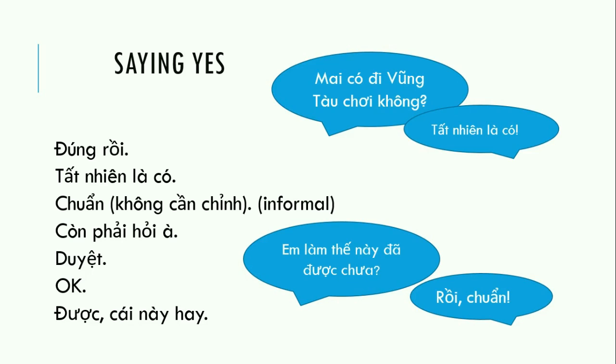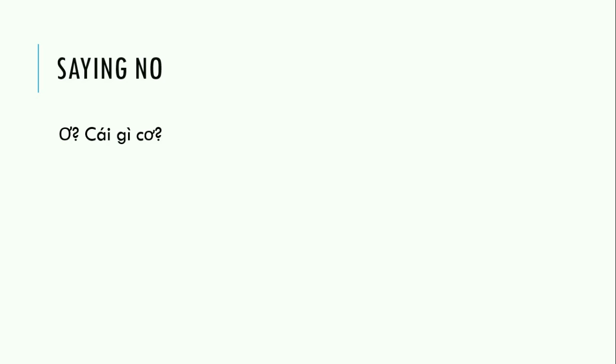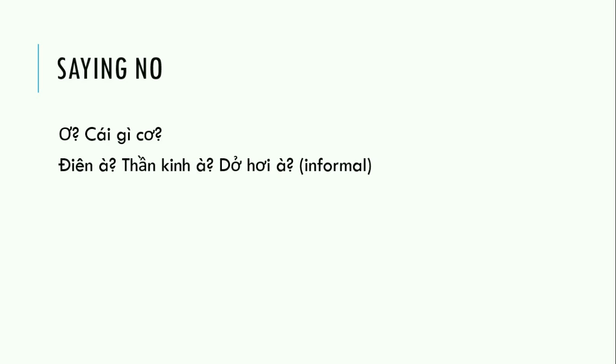Now some phrases to say no. Most of them are quite informal. If you want others to repeat what they said, you can say 'ơ' or 'hả' — meaning 'what?' If something sounds crazy, you say 'điên à' — 'are you crazy?' These expressions all mean 'I don't believe what you're saying.' Very informal. You can also say 'ai bảo' — 'who said that?' — said very fast, linking the words. It means 'are you kidding me?'